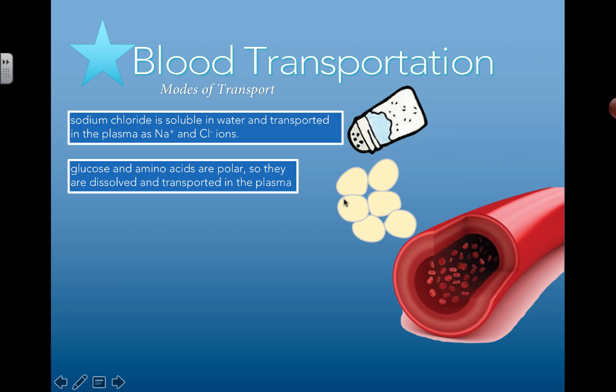Glucose and amino acids are also polar, so they're also transported through the blood, dissolved in the plasma.